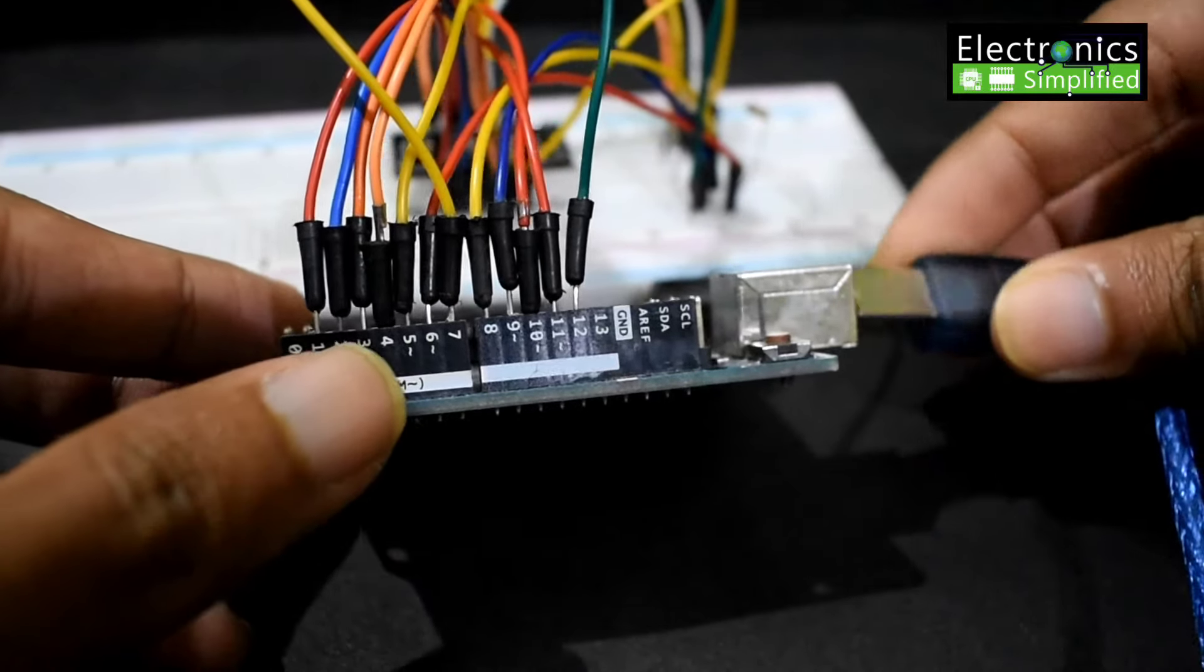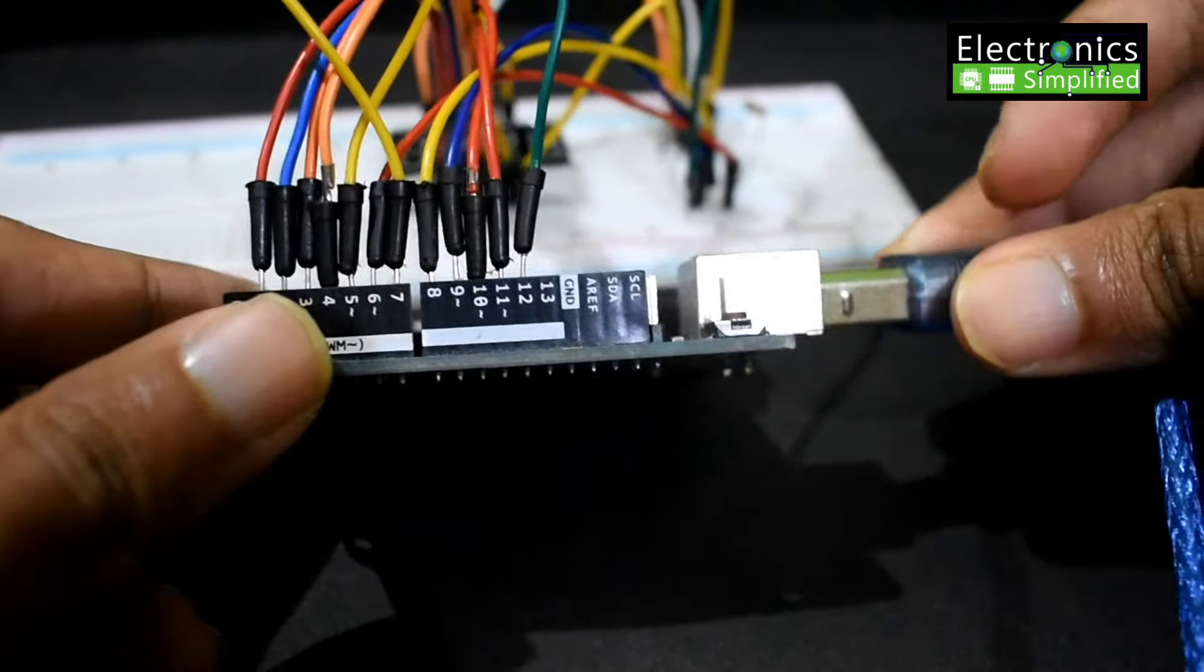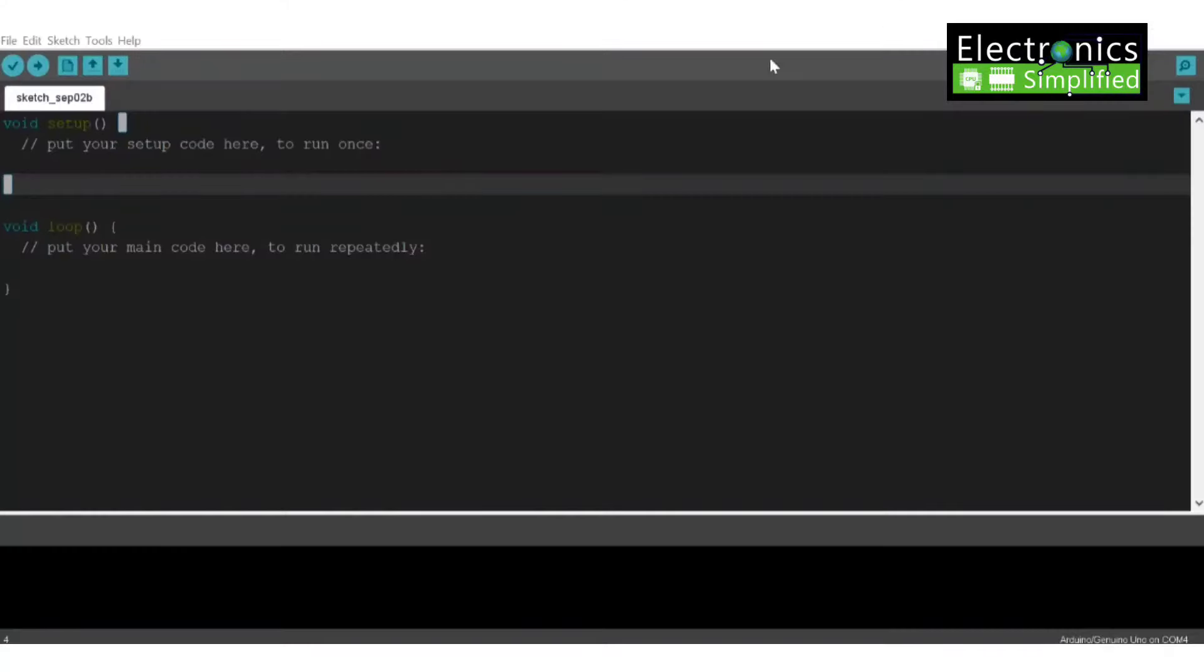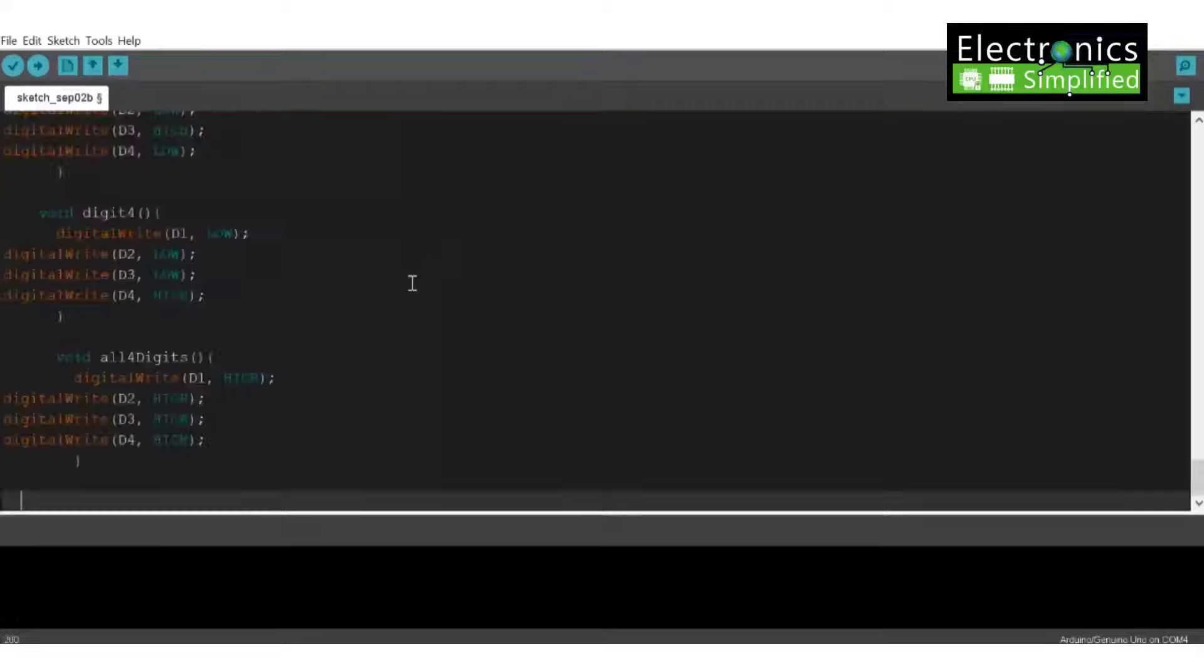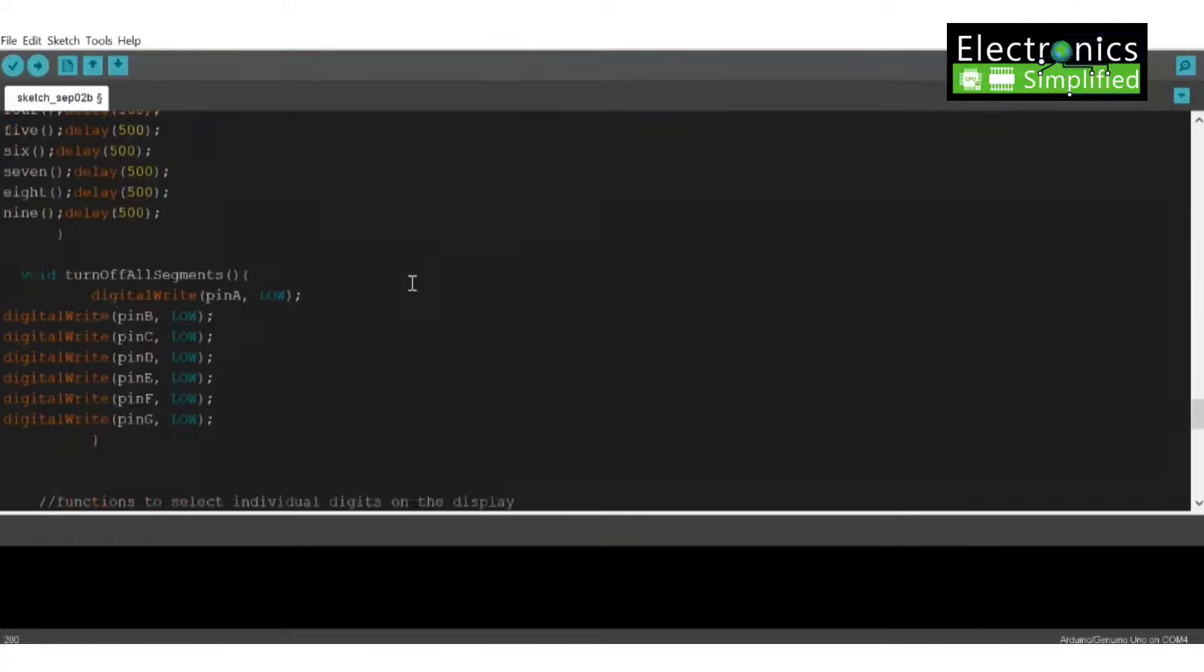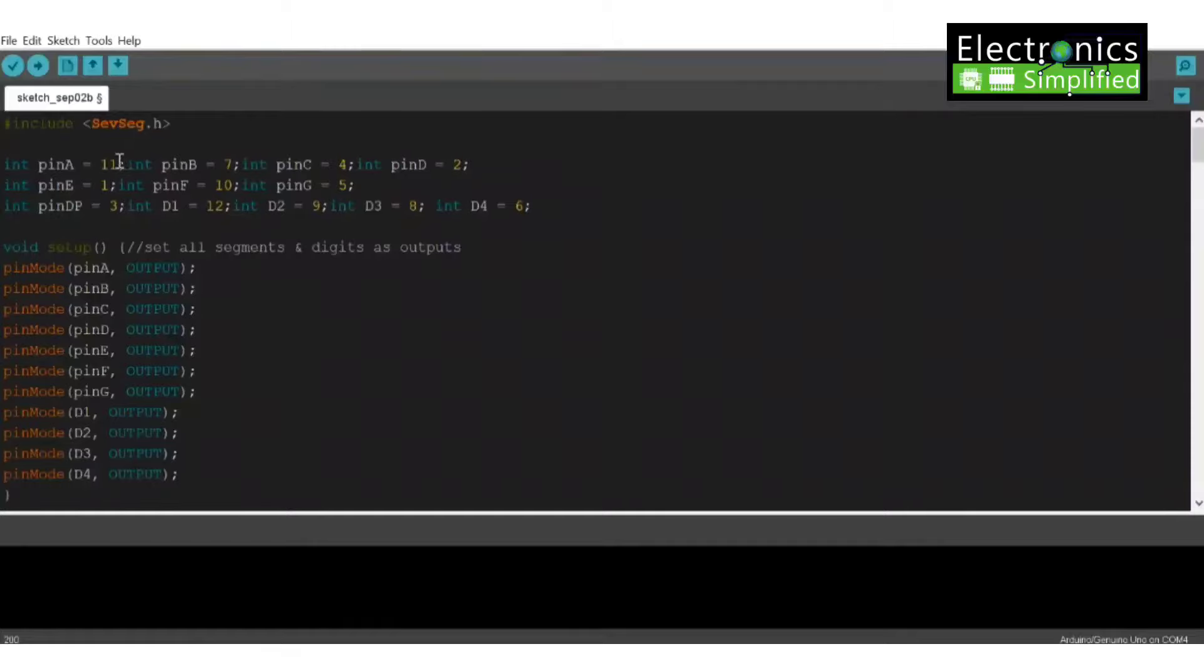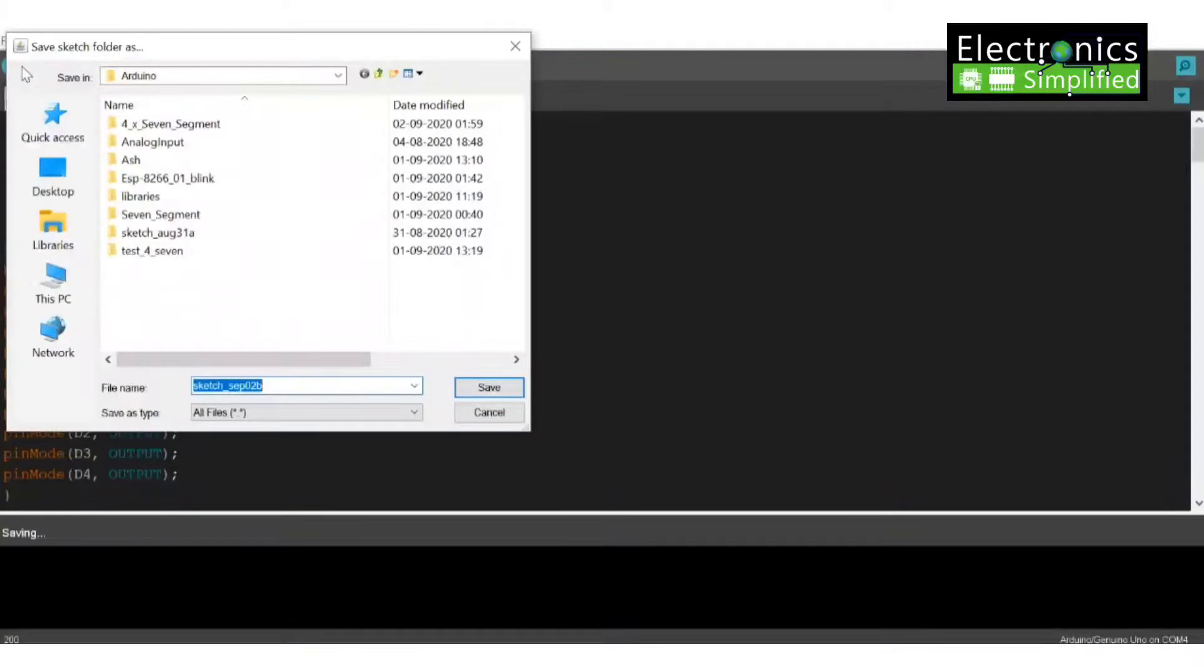Now connect the USB cable so that we can start programming it. And this is the code. The code is available in the description. You can click on the link and download the Arduino IDE file. It's a .ino. So here I have done some manipulations in the code. So you don't have to worry about any of the connections that you have done. So save it wherever you want to save it.